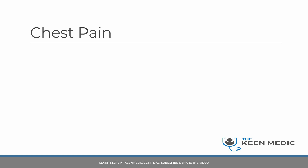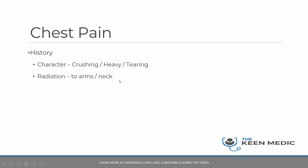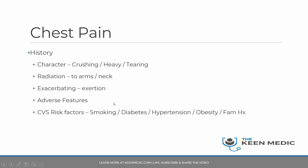The first scenario is chest pain, probably the most common thing you will see in real life. With chest pain, you need to look out for the character — whether it's crushing, heavy, or tearing — and radiation to the arms and neck, which specifically points towards acute coronary syndromes. Tearing is more specifically for aortic dissection. Exacerbating factors such as whether it is worse with exertion, again for acute coronary syndrome, and the adverse features highlighted earlier.